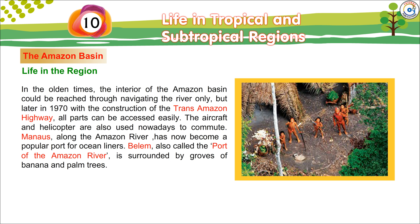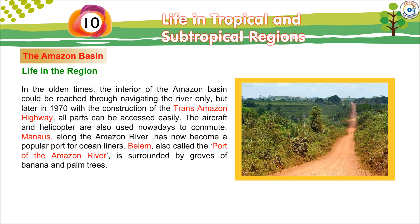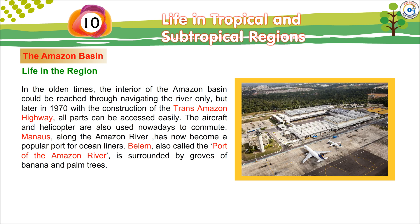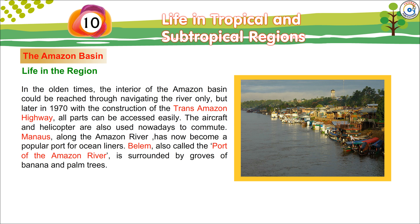Some families own large apartment-like houses with steeply slanting roofs called Maloka. In the olden times, the interior of the Amazon Basin could be reached only by navigating the river. But later in 1970, with the construction of the Trans-Amazon Highway, all parts can be accessed easily. Aircraft and helicopters are also used nowadays to commute. Manaus, along the Amazon River, has now become a popular port for ocean liners. Belem, also called the port of the Amazon River, is surrounded by groves of banana and palm trees.